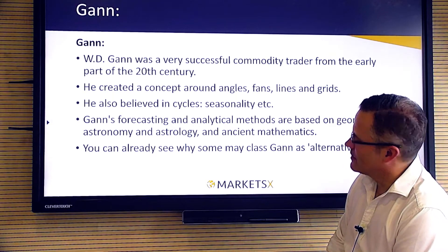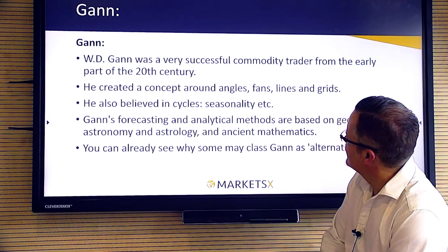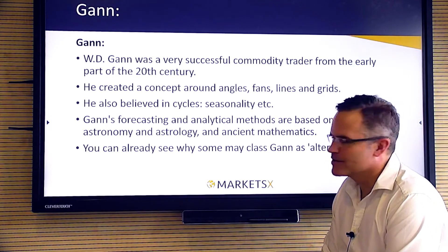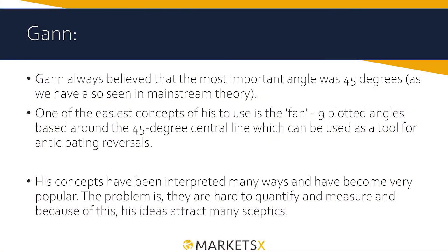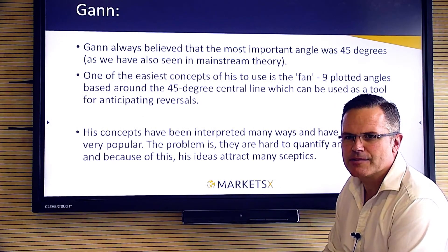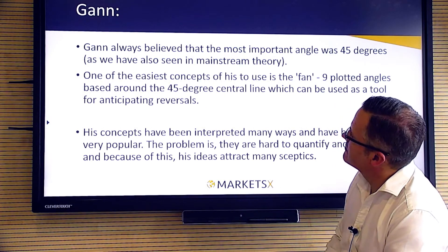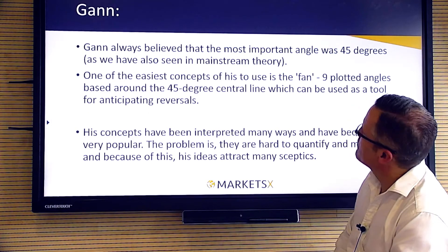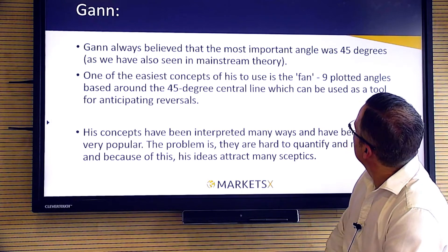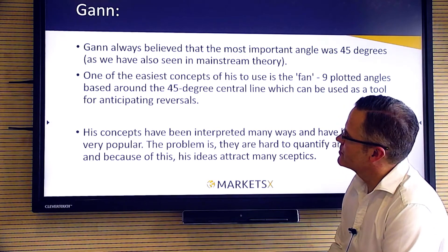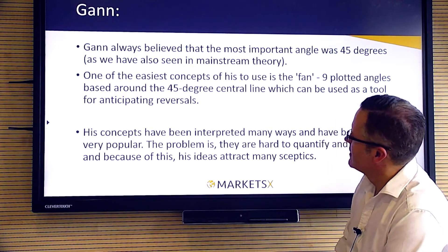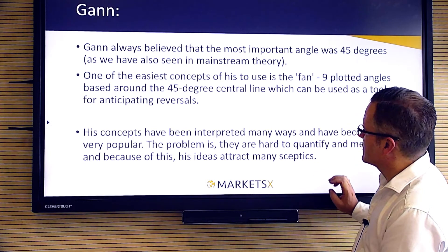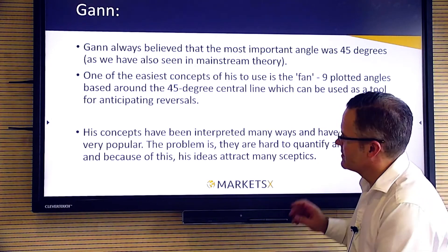You can already see why some people, when I mention the words astronomy and astrology, might think this is a bit strange — but again, it works for some people and is very popular in the world of technical analysis, so don't rule it out. What did he believe? That the most important angle on any trend was 45 degrees — that makes sense when you think of supply and demand and the strength of trends. He created a simple fan concept with nine plotted angles based around a 45-degree line, used as a tool for anticipating reversals. His concepts have been interpreted many ways and are very popular, though hard to quantify and measure — and as you can understand, there are many sceptics.